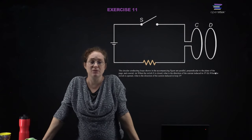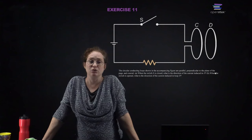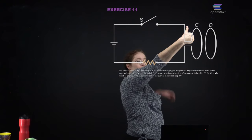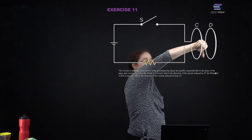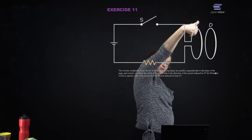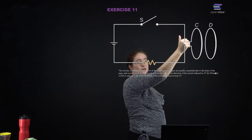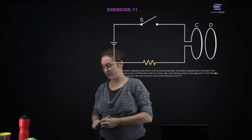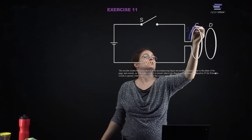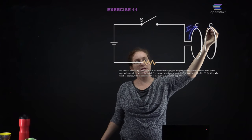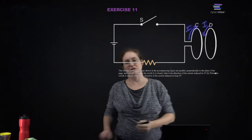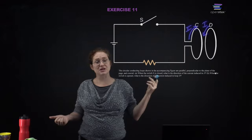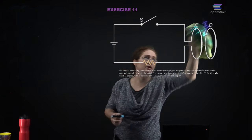With the same conducting loops: when you close the switch, the magnetic field is pointing towards you in C, so you get a current in one direction. The current in loop D is going to be in the exact opposite direction because it's going to fight the changing magnetic flux. When the switch is opened, all of a sudden the flux is going to decrease, so the direction of the current through loop D switches.